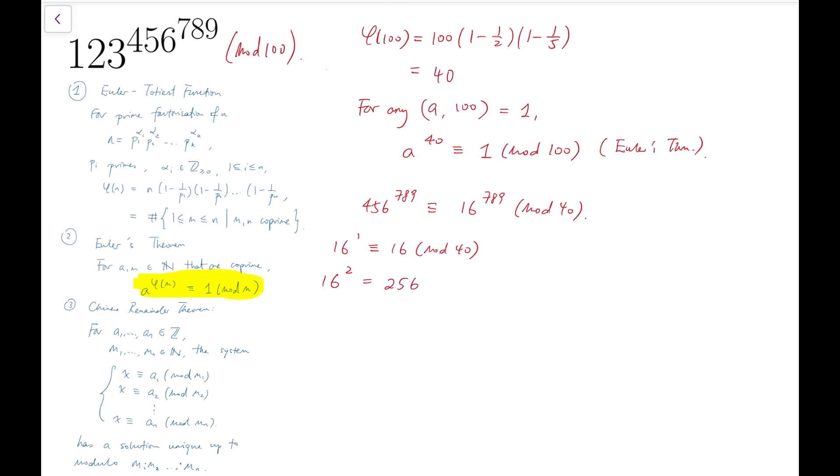So we know that no matter how many times we multiply 16 by this number, when we divide it by 40, the remainder is still 16. So if we keep iterating, we know that 16 to the power of 789 is congruent to 16 mod 40. That's our first method.